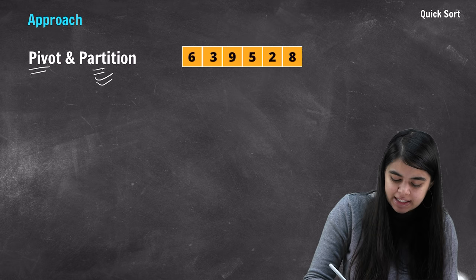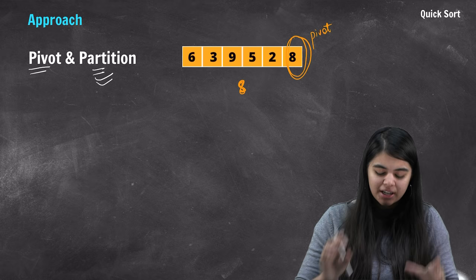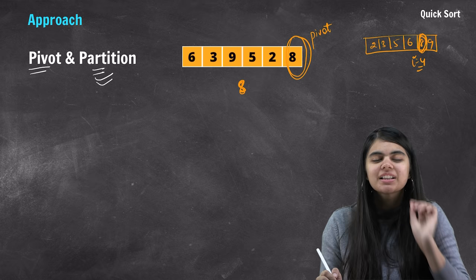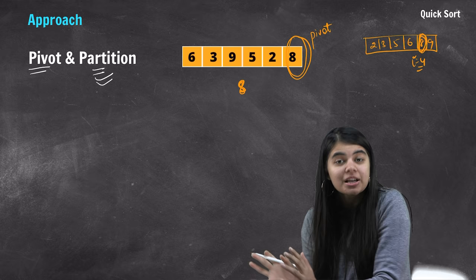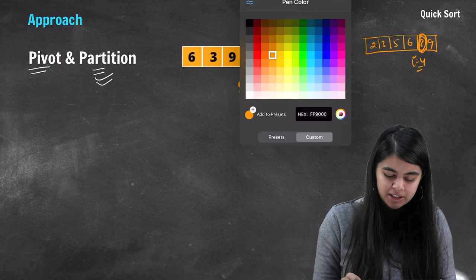If we want to see where the pivot belongs in the fully sorted array, it will be somewhere in the middle in general cases. If I sort this array, the elements will be arranged in some order. The pivot will be at some index — say i equals 4. So i equals 4 is the correct position of the pivot. Our job is to send elements smaller than the pivot before it, and elements larger than the pivot after it.